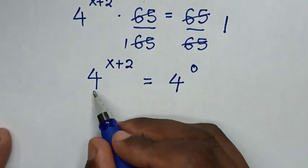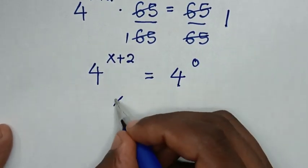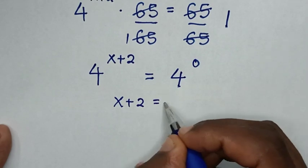Then, because we have same base of 4, so we will compare the powers. So it will be x plus 2 is equal to 0.